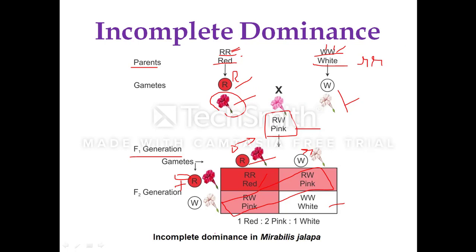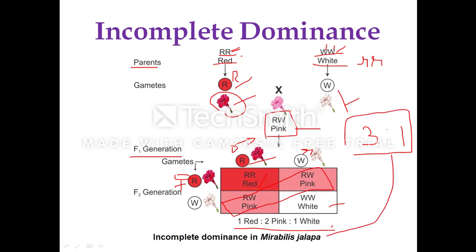In the F2 generation, the genotypic ratio is 1:2:1. Unlike the standard monohybrid cross which gives a 3:1 phenotypic ratio, in Mirabilis jalapa flower color inheritance the ratio deviates to 1:2:1. This is the mechanism of incomplete dominance. I hope you understood the process of incomplete dominance. Thank you.